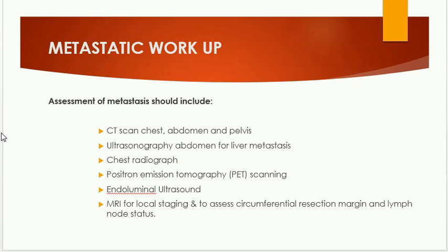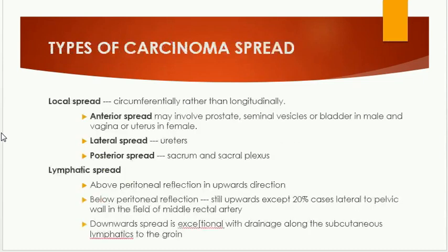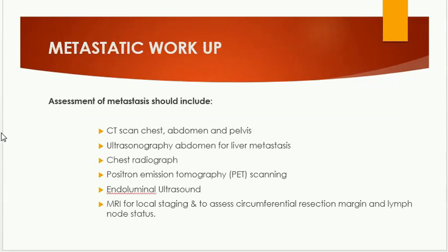Regarding differential diagnosis, many colorectal lesions can give rise to diagnostic difficulty. It may be difficult to distinguish an inflammatory stricture or amoebic granuloma on macroscopic appearance. Similarly, endometriomas, carcinoid tumors, and solitary rectal ulcers can be mistaken for adenocarcinoma. Benign adenomas can be distinguished from malignant lesions based on the appearance of their mucosal pit patterns. Biopsy and histological analysis remains the mainstay of diagnosis.